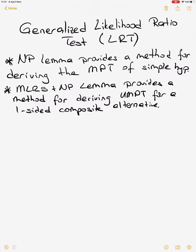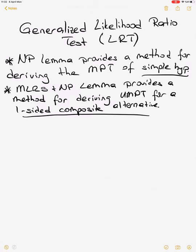In the first case we have a simple hypothesis; in the second case we have a one-sided composite alternative hypothesis. So we don't have any testing procedures for a two-sided test, or when we have more than one parameter and our interest is just one of them. In that case, the other unknown parameters are nuisance parameters, so we need new testing procedures to handle those.